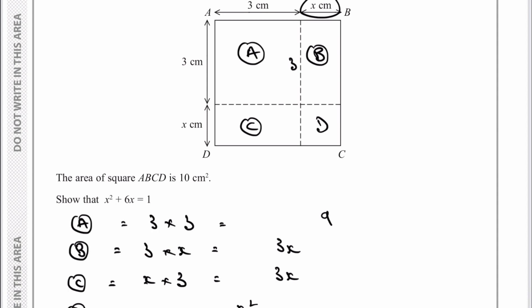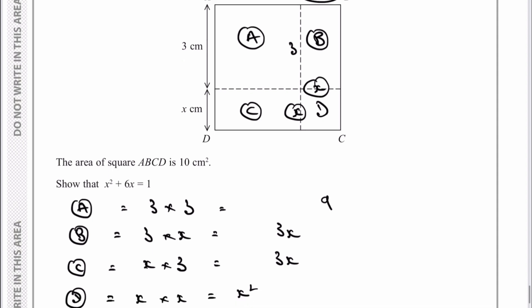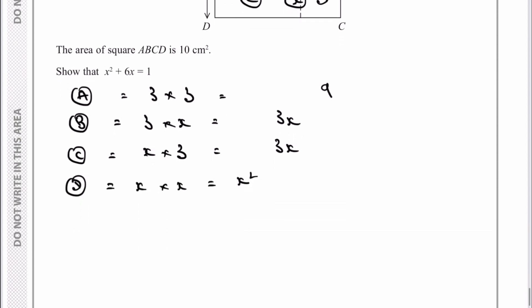Then I've got C, which is x times 3. I would still write it as x times 3, even though when I multiply it out, it's going to be 3x, just because it's easier then to see. And then finally, I've got D, which is going to be x times x, which equals x squared. You've got x at the very top, and then you've also got x here.